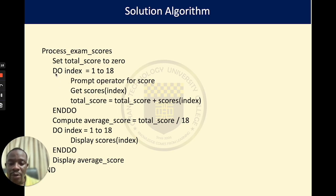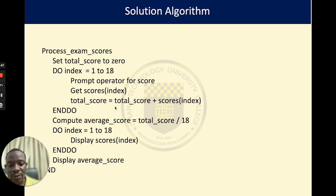We say: do index starting from 1 to 18. When the index is equal to 1, we prompt for the score and get scores[1]. Here, 'scores' is the name of our array. After getting scores[1], we calculate the total by adding the received value, scores[index], to whatever is already in total score. So total score equals total score plus scores[index].